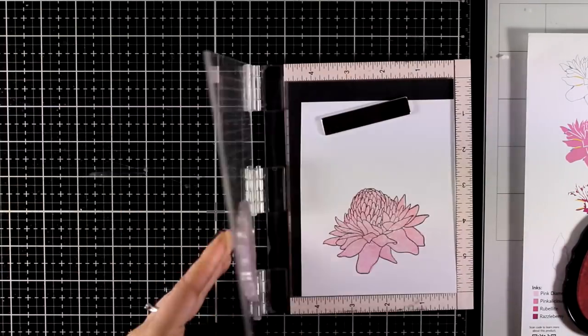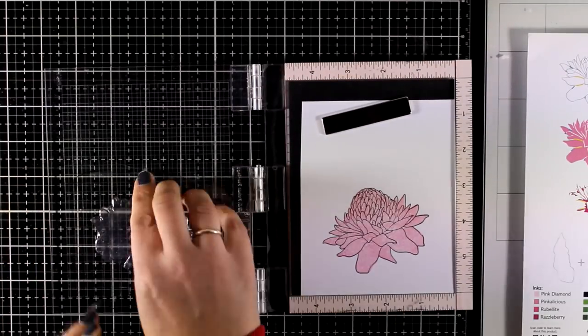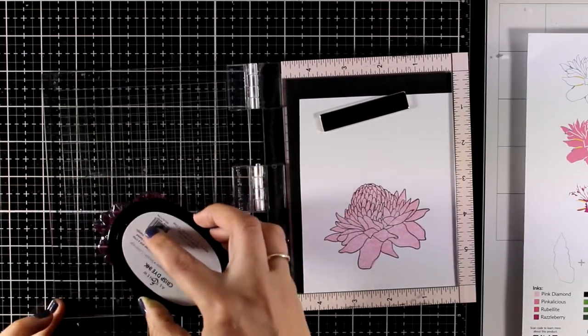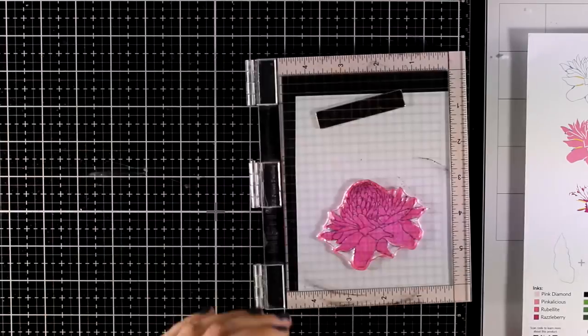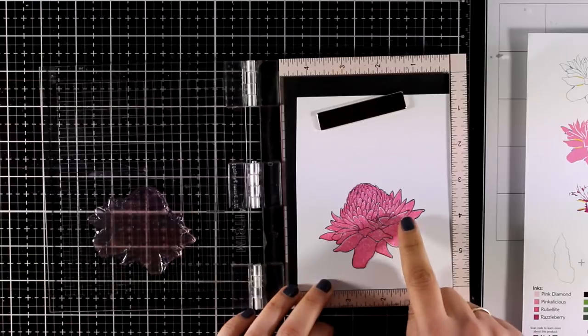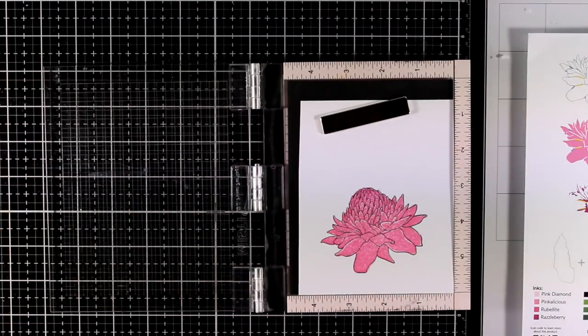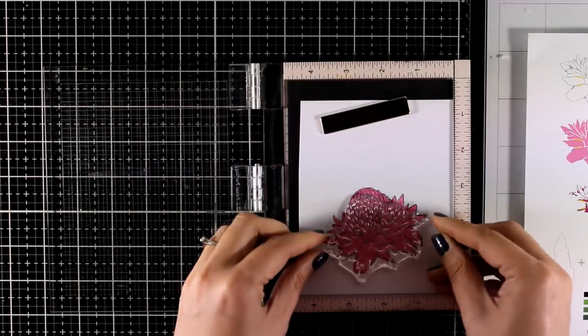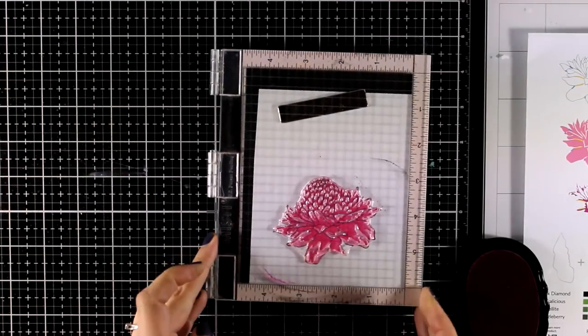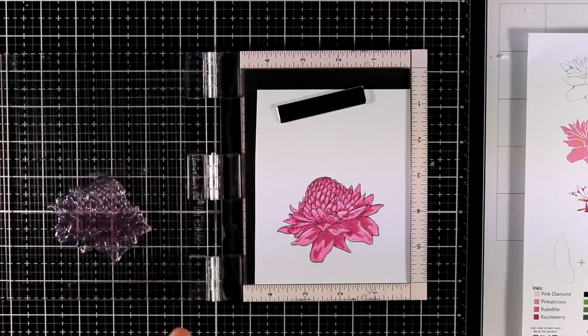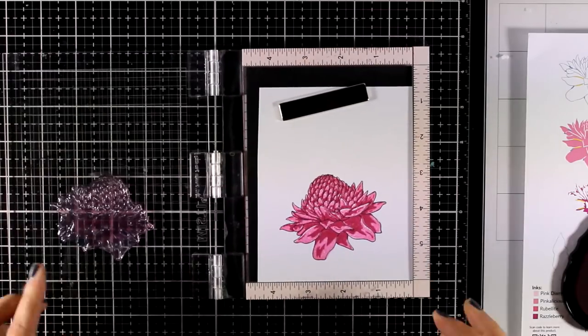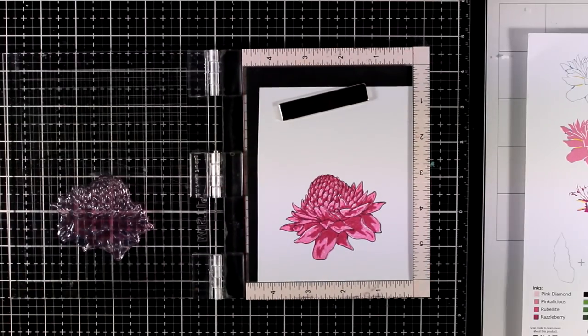Now I'll move on to coloring with all the different layers the petals. I'm going with pinks for my torch ginger flower. The first layer was stamped with pink diamond. This is pink alicious, which leaves some highlights on the tips of the petals. Then I'm adding the third layer, which is lube light.